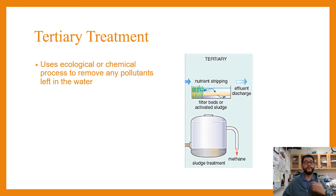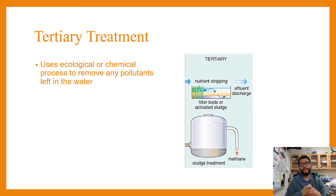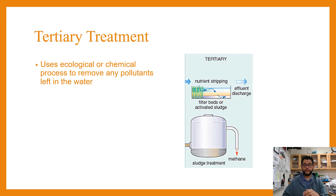In tertiary treatment, ecological or chemical processes are used to try to remove any other chemical pollutants that are in the water. That's going to be things like PCBs, hormones, stuff like that — anything we can try to get out of the water. That is tertiary treatment.